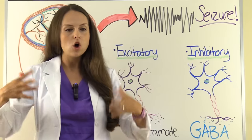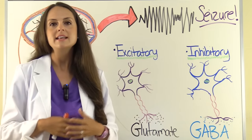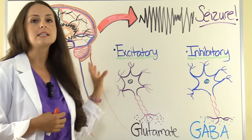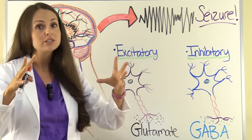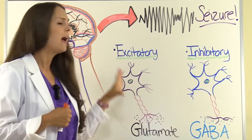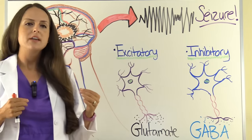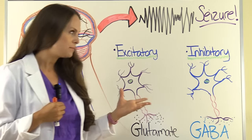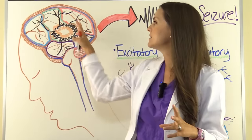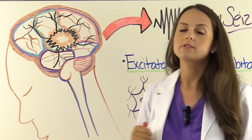In a healthy brain not having seizure activity, you have a nice fine balance between excitatory and inhibitory neurons. If inhibitory neurons are damaged, excitatory neurons take over and overstimulate parts of the brain, sending abnormal signals which lead to seizure activity. This is why one of our anti-seizure medications, barbiturates, works by stimulating GABA receptors to decrease excitation and calm things down, reducing seizure activity.